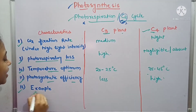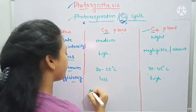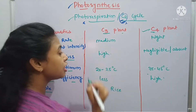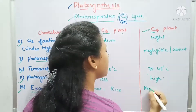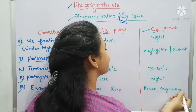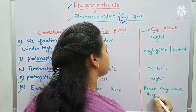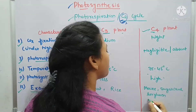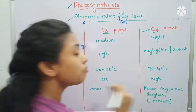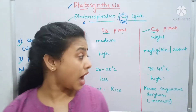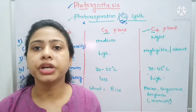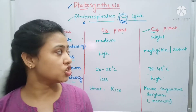C4 plants have more photosynthetic efficiency because they can prevent photorespiratory loss, while C3 plants have less. Examples of C3 plants include wheat and rice, while C4 plants include maize, sugarcane, and sorghum. Mostly monocots come under the C4 category. This concludes our discussion of photorespiration and the differences between C3 and C4 plants.